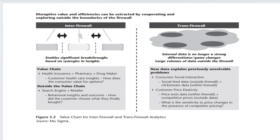For the value chain in inter firewall analytics, it enables significant breakthroughs based on synergies in insights. The value chain is based upon health insurance, pharmacy, and drug maker — all three communicating with each other in the form of a chain connection, which is why it is called the value chain. Healthcare insights show how the customer values his options. Outside the value chain, customers may go to search engines or retailers, giving behavioral insights on what they finally bought.